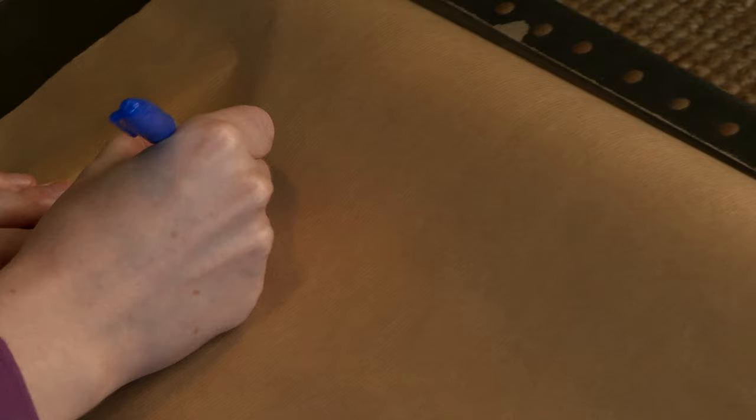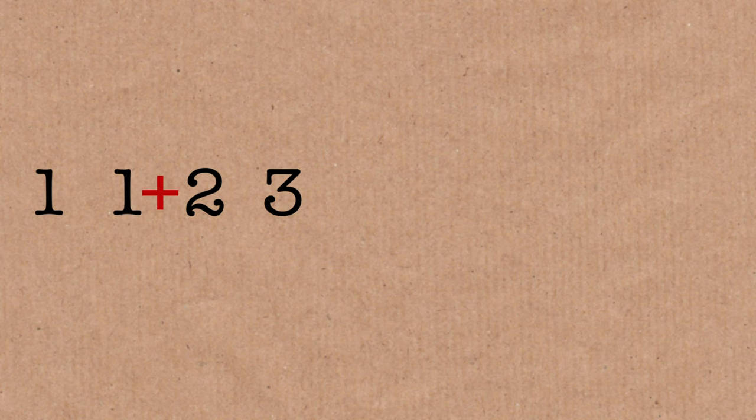Your Fibonacci sequence starts with a 1 and a 1, and then the next term is the sum of the previous two. We're going to add those together. So 1 plus 1 makes 2, 1 plus 2 makes 3, 2 and 3 make 5, 8, 13, 21, and so on.